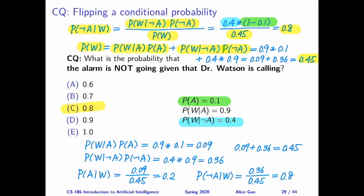So for our second approach, we are not only just calculating one probability. The question is only asking us to calculate the probability of not A given W, but using this approach as a byproduct, we'll end up calculating the probability of A given W as well.